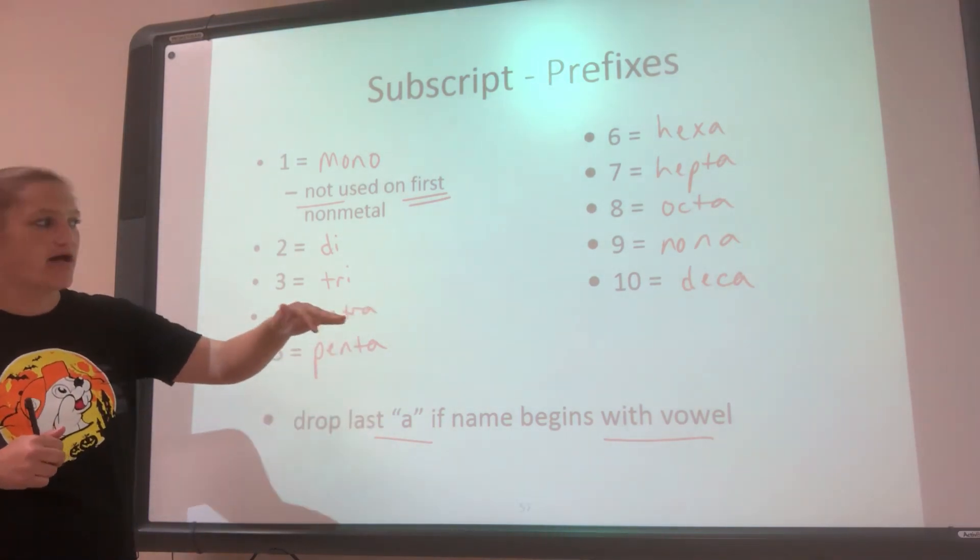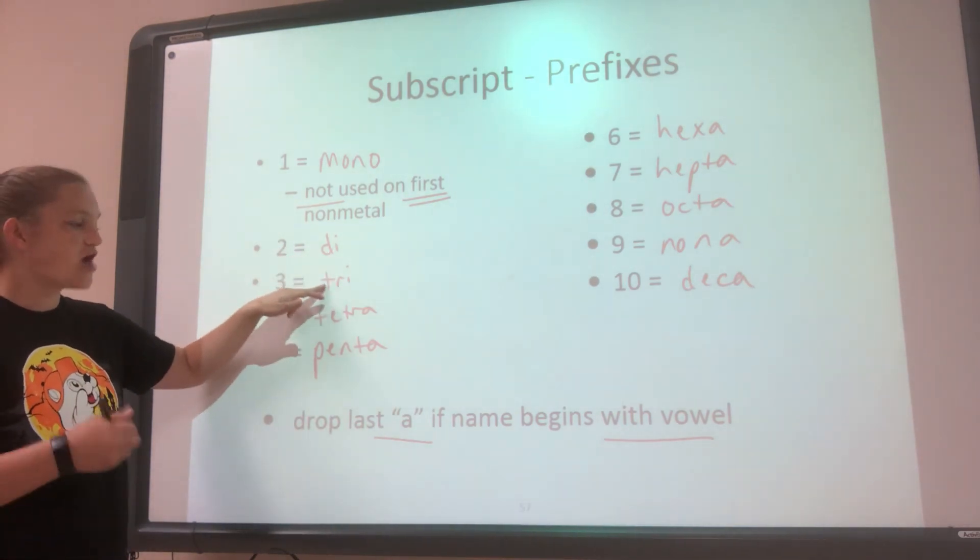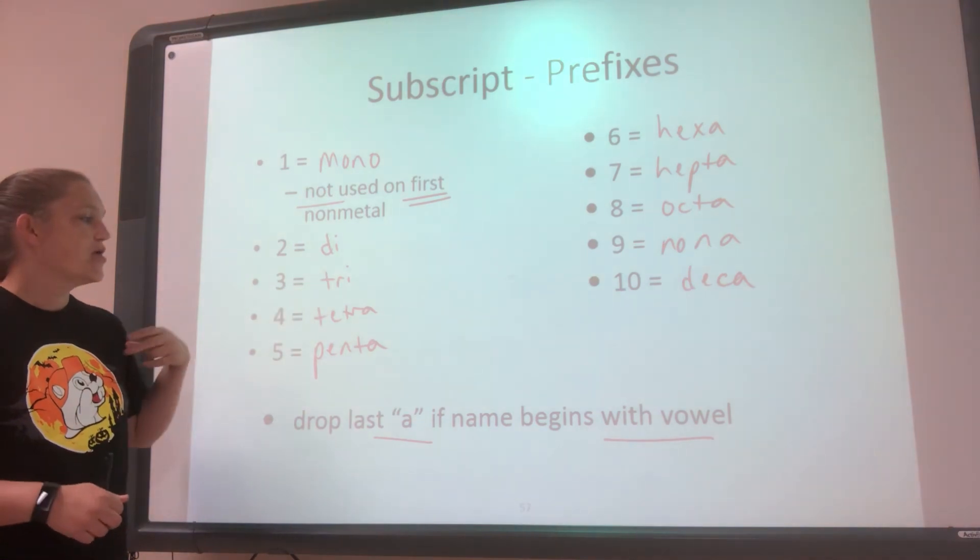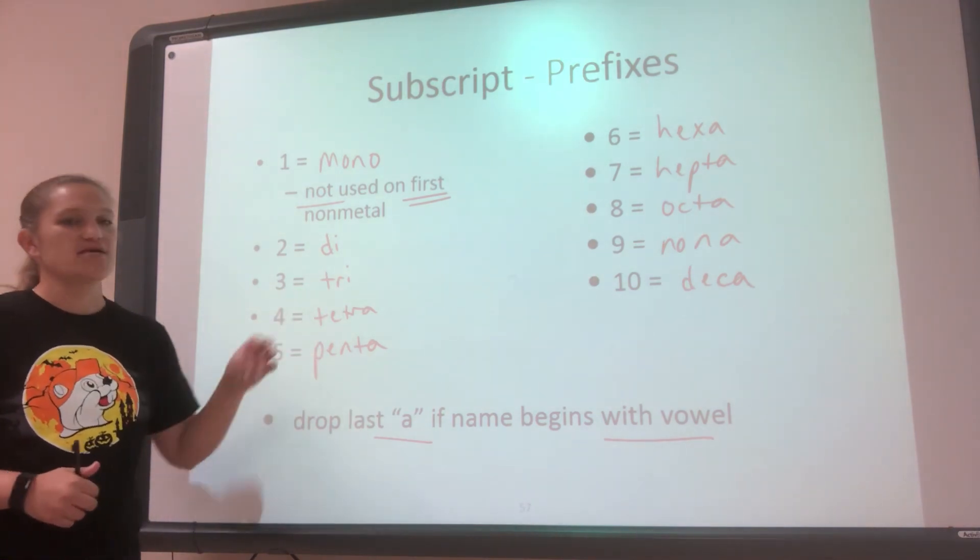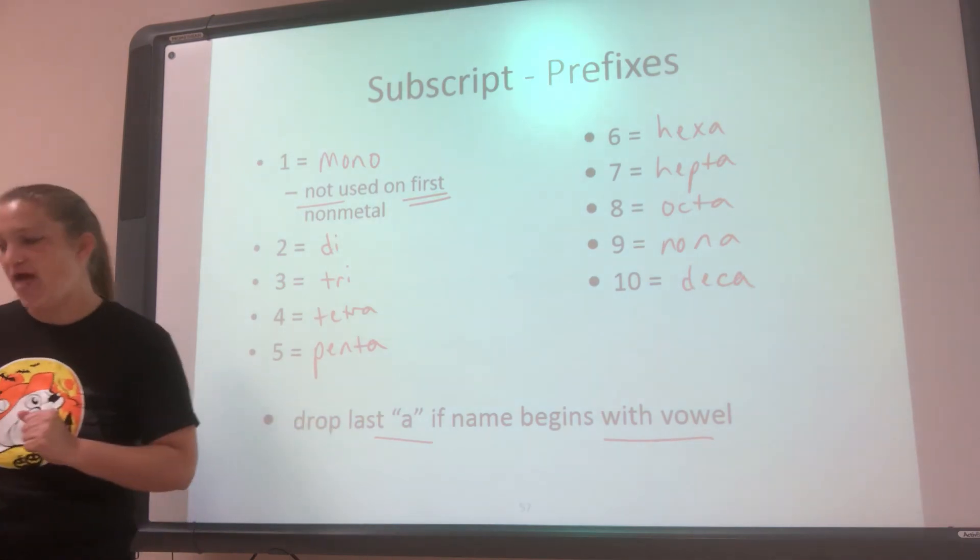Like decaiodine, not deca-A-iodine. But if it's with the I's, we leave it to be diiodine, triiodine. But with the A's, we drop the A's if the first letter in the name of the element starts with a vowel.